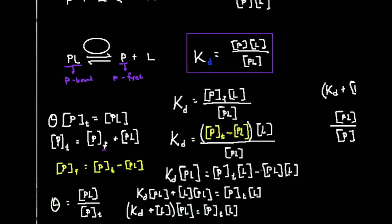What I'm going to do is solve for the free protein, because that's what appears in the equilibrium expression. If I subtract the concentration of PL to the other side, I get that the concentration of free protein equals the total protein concentration minus the ligand-bound protein. Now I'm going to take this expression for free protein and plug it into the KD expression. So KD, the dissociation constant, is now equal to the ligand concentration times the difference of the total protein concentration minus the PL complex, divided by the PL complex.